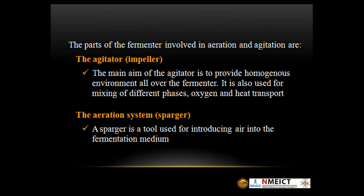The parts of the fermenter involved in aeration and agitation are the agitator and the aeration system. The main aim of the agitator is to provide a homogeneous environment all over the fermenter. It is also used for mixing of different phases, oxygen and heat transport. A sparger is a tool used for introducing air into the fermentation medium.